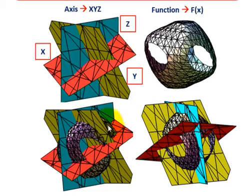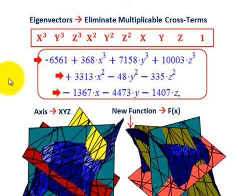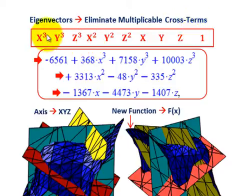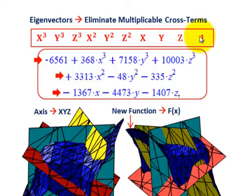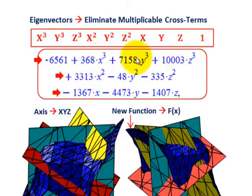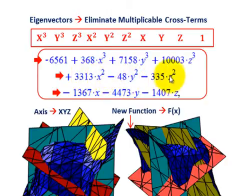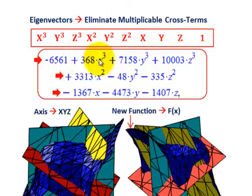So we're dealing with a complicated function. By eliminating the multiplicable cross terms, this is what we're going to come up with: we'll have some x cubed, y cubed, z cubed, and then we'll have x squared, y squared, z squared, and x, y, and z, plus that unit of one. This is how we've reduced that function into more workable terms. I've got all my x, y, and z cubed functions showing up at the top times some coefficient amounts, then x squared, y squared, z squared terms, then just the x, y, and z terms, and then that lone value.